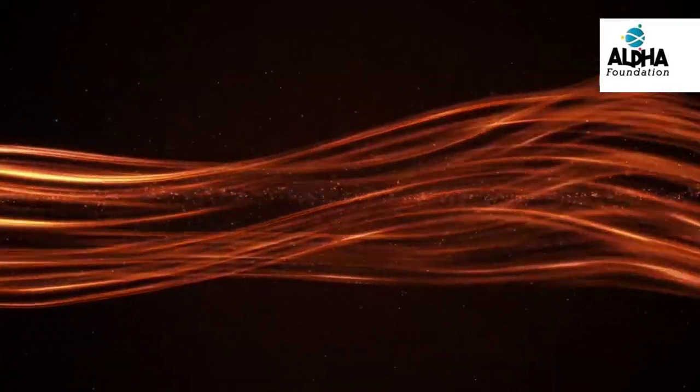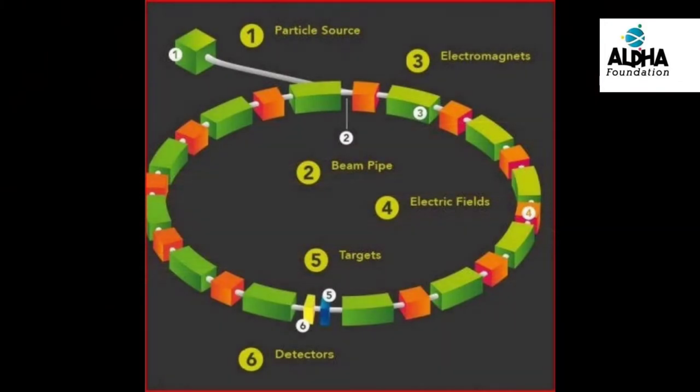The main parts are the particle source, the beam pipe through which the particles travel, then we have the electromagnets, the targets, detectors, and of course an electrical power system, etc.